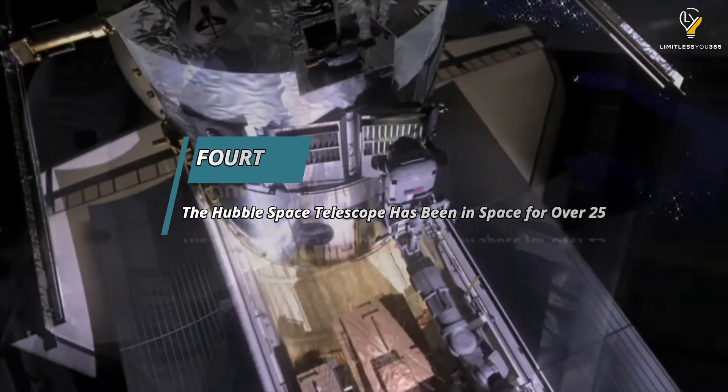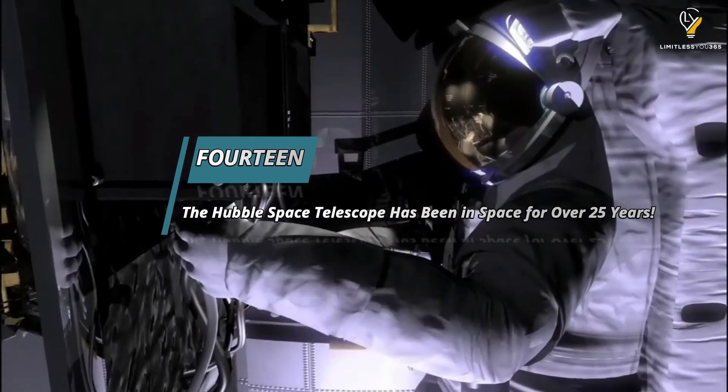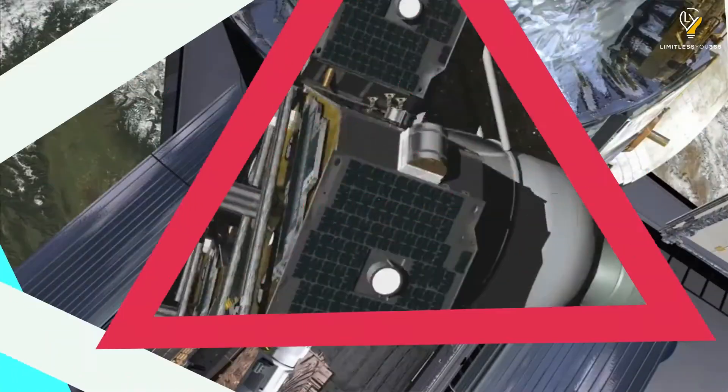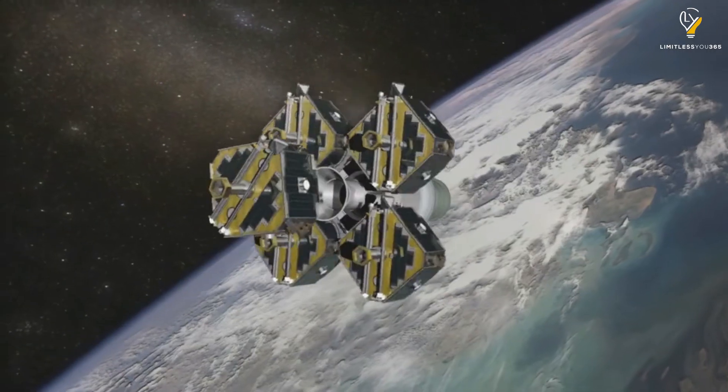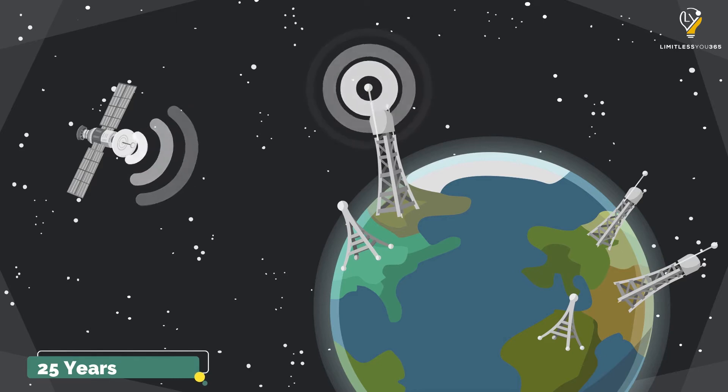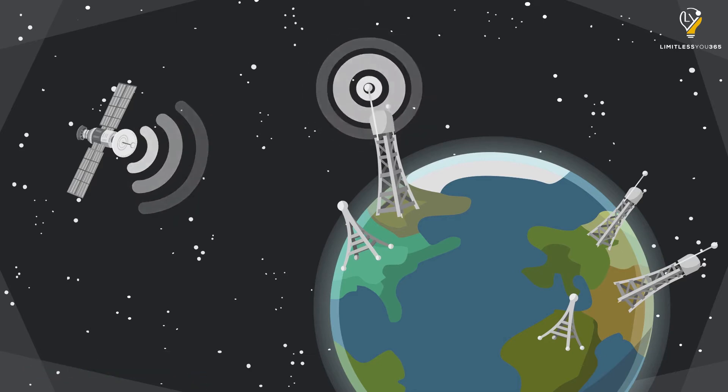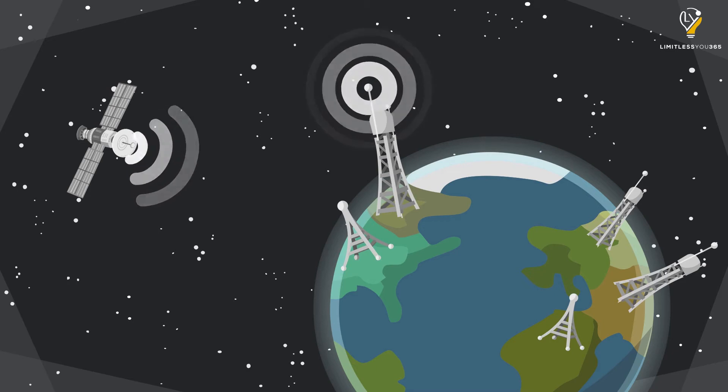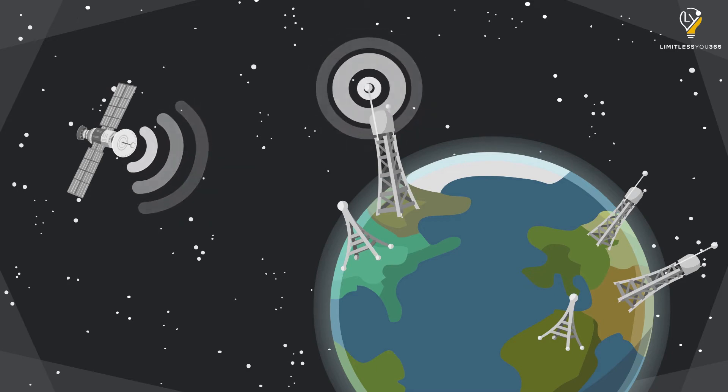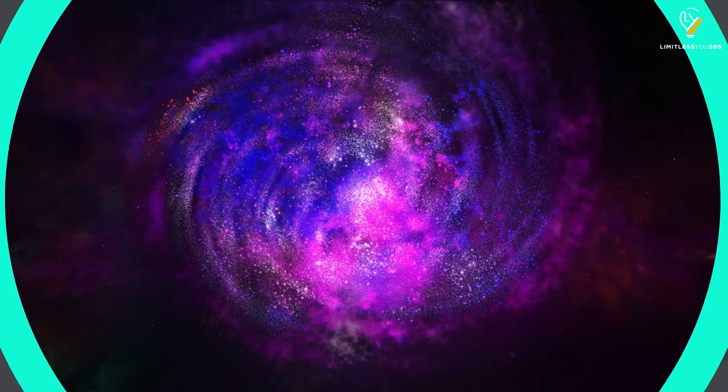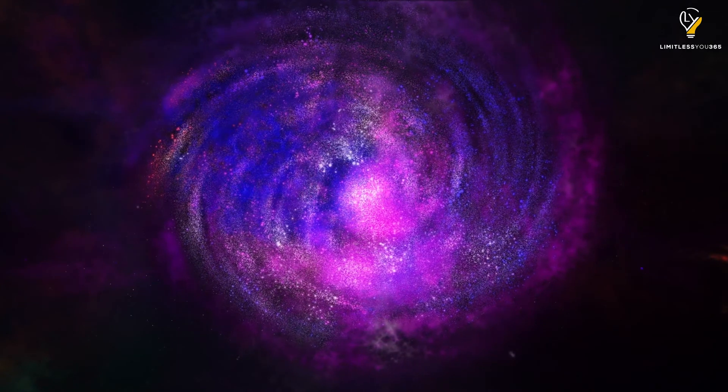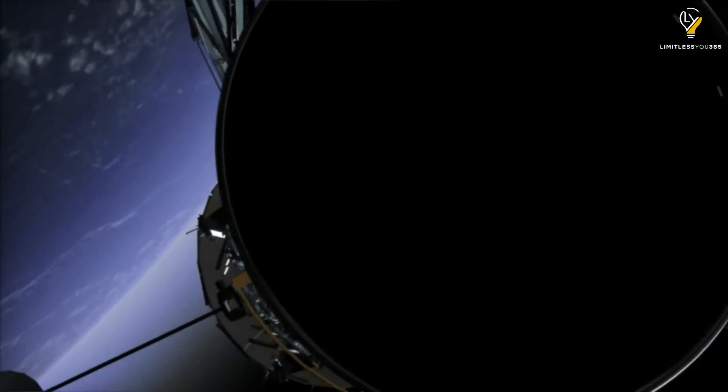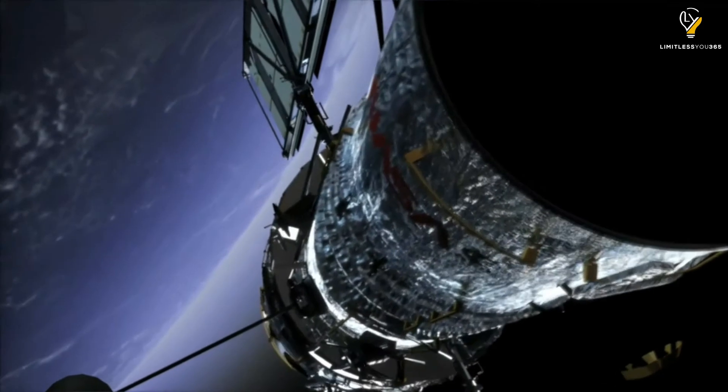Number fourteen: The Hubble Space Telescope has been in space for over 25 years. The Hubble Space Telescope is one of the most important pieces of equipment in the study of outer space. It's been orbiting around Earth for over 25 years, sending back information and photos about everything it finds, and it's showing no signs of stopping anytime soon. So next time you look up at the stars, remember that there's a whole lot out there that we still don't know about, and the Hubble Space Telescope is helping us find out more every day.